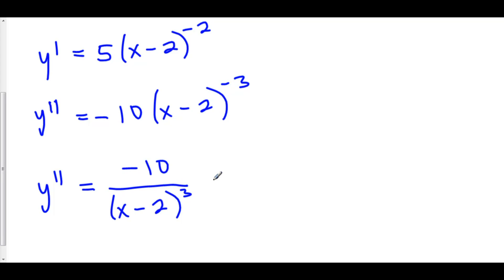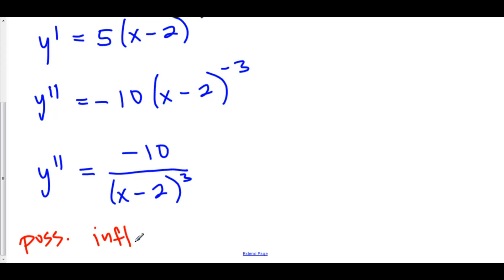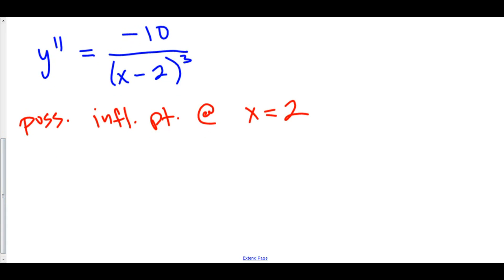We need to find the possible inflection points of y by finding where y double prime equals zero or is undefined. Setting -10/(x-2)³ = 0 would require -10 = 0, which never happens — so there are no zeros. However, y double prime is undefined at x = 2, giving us a possible inflection point there.